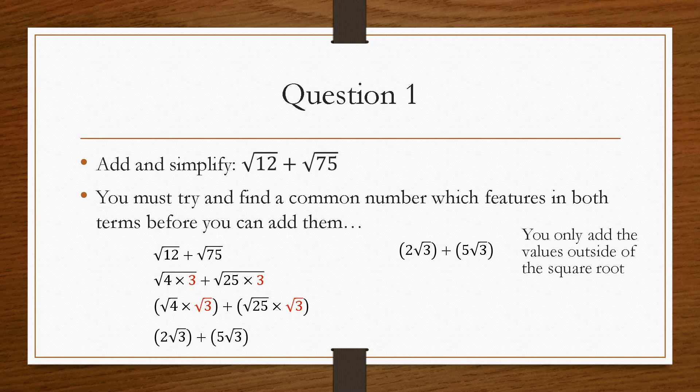Now that means that we are ready to add the values, only the values outside of the square root sign. So that means that the final answer to this question is 7 root 3.